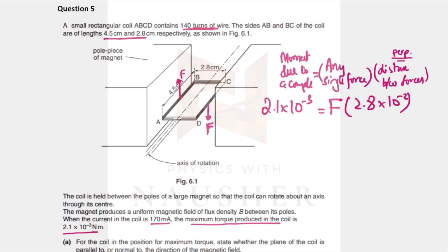For the coil in the position for maximum torque, this is the position for maximum torque. Explain whether the plane of the coil - this is the plane of the coil - is parallel or perpendicular to the magnetic field. This is the direction of the magnetic field. The plane of the coil is parallel because it's horizontal.